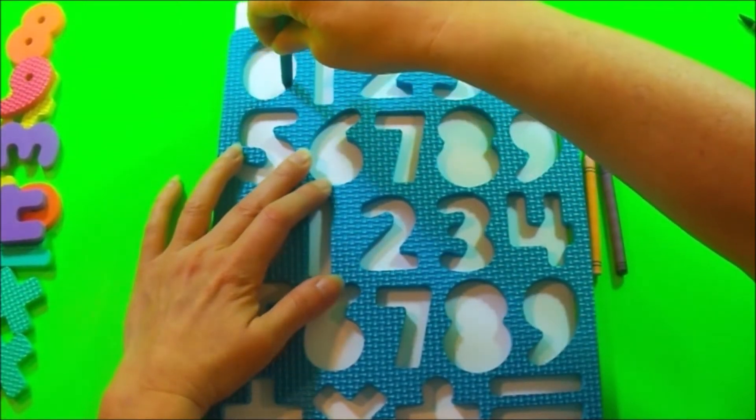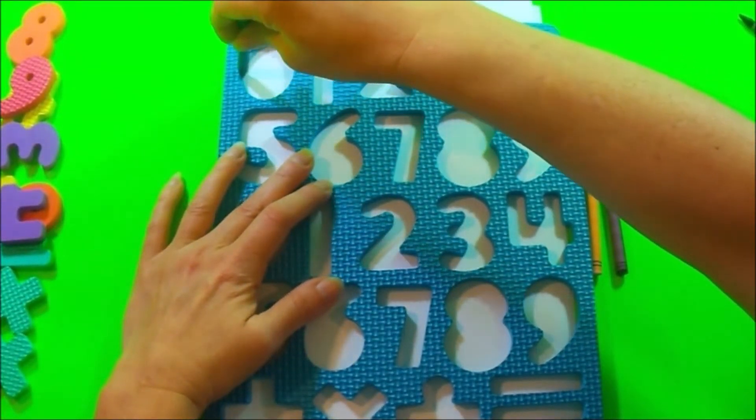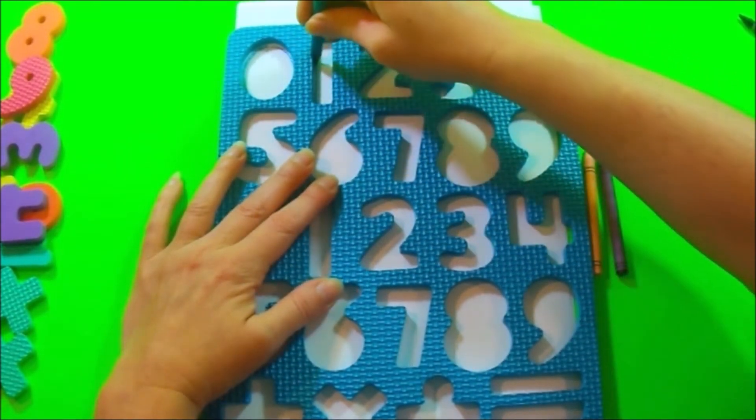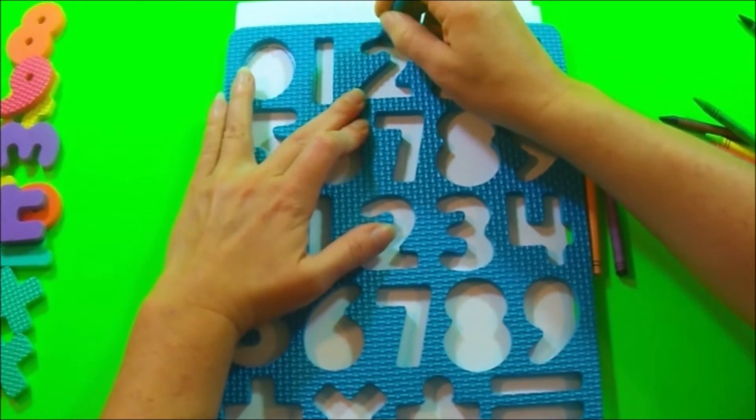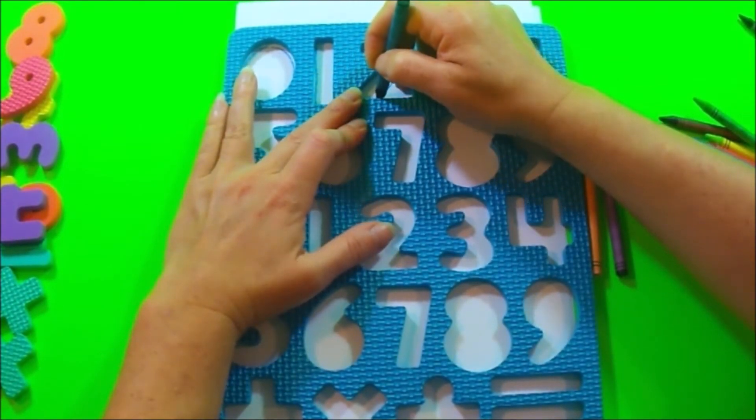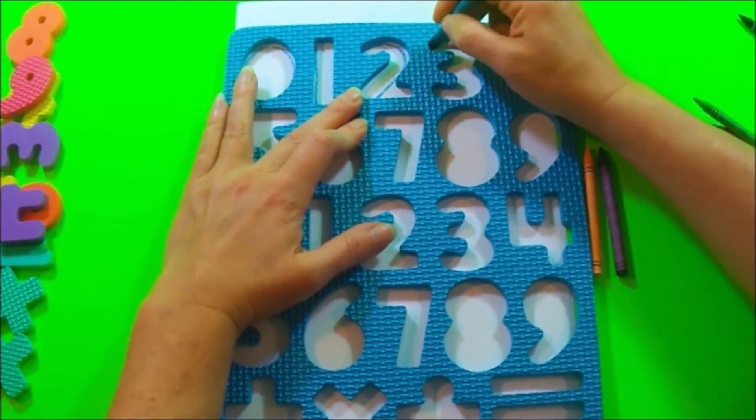Zero. You make a circle. Zero. One. Up and down. Two. Around, down, and across.